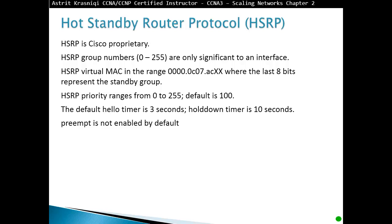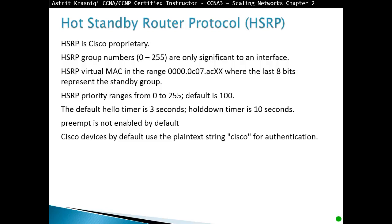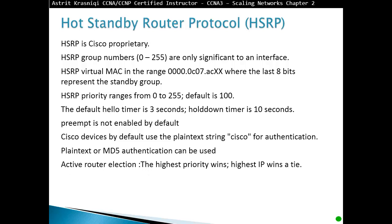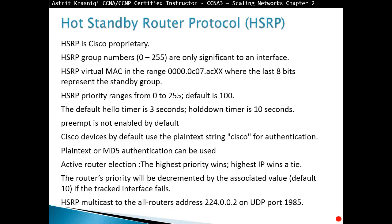Preempt is not enabled by default. Preempt means that if a router had a higher priority but went down and another router became active, when the original router comes back online it will immediately take over as the active router again. Cisco devices by default use the plaintext string 'cisco' for authentication, though plaintext or MD5 authentication can be used. For active router election, the highest priority wins; if priorities are equal at the default of 100, the highest IP address wins. Router priority will decrement by the associated tracked value — for example, by 10 for a tracked interface. HSRP uses multicast address 224.0.0.2 on UDP port 1985.